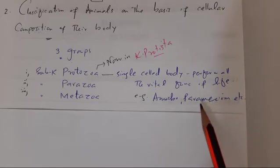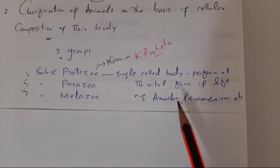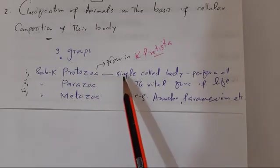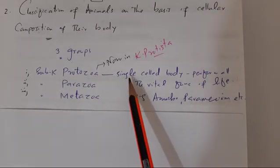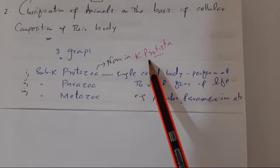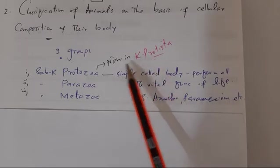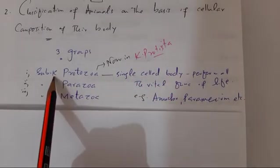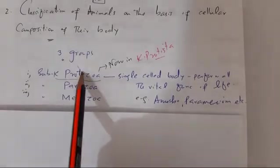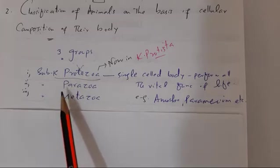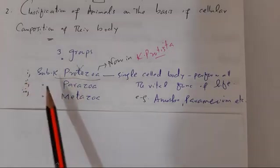However, sub-kingdom Protozoa, which includes the single-celled or unicellular animals, is now placed in Kingdom Protista. We now do not study Protozoa in Kingdom Animalia. The second group or sub-kingdom is sub-kingdom Parazoa, which are the pseudometazoans, and sub-kingdom Metazoa are the true multicellular animals.